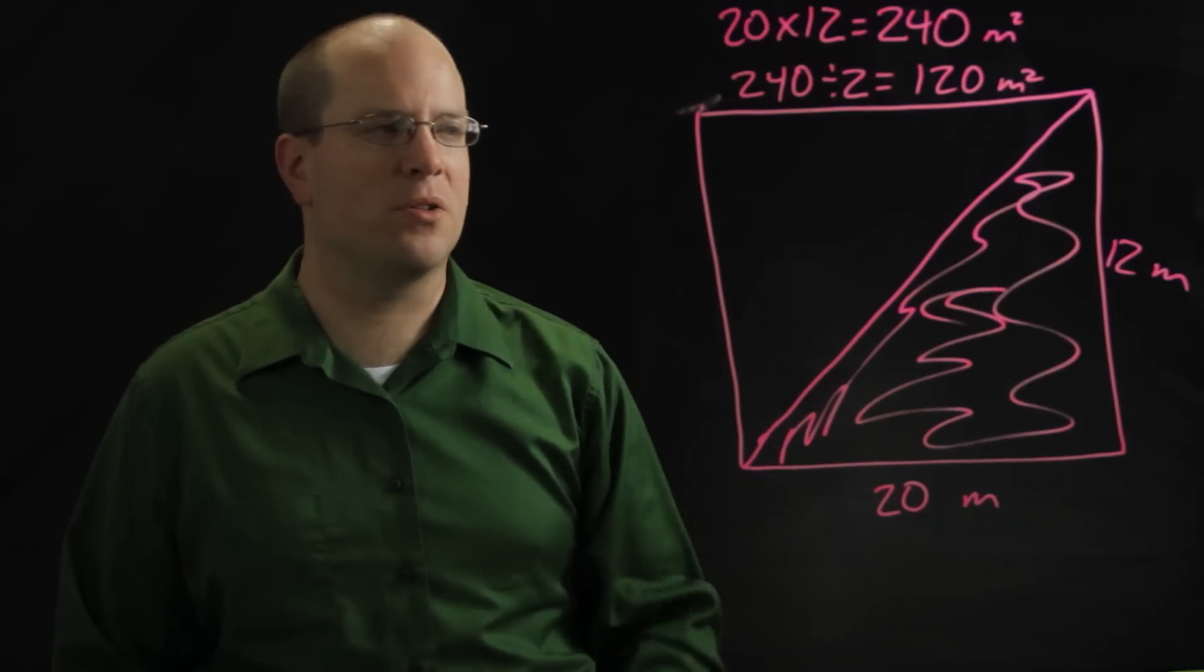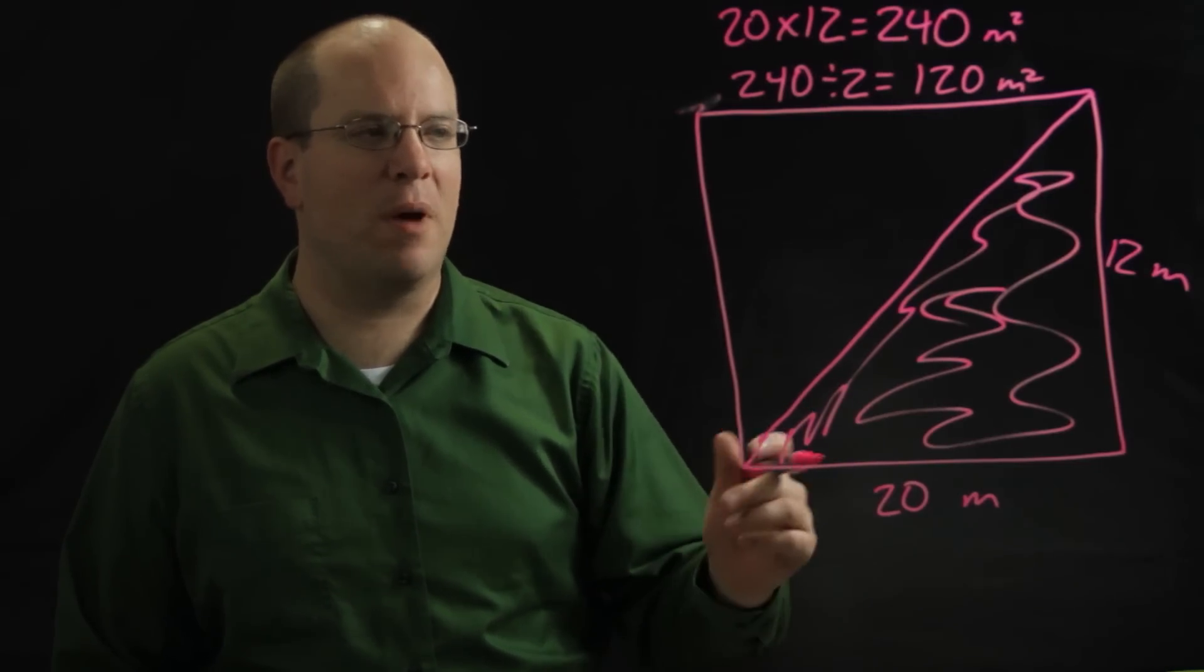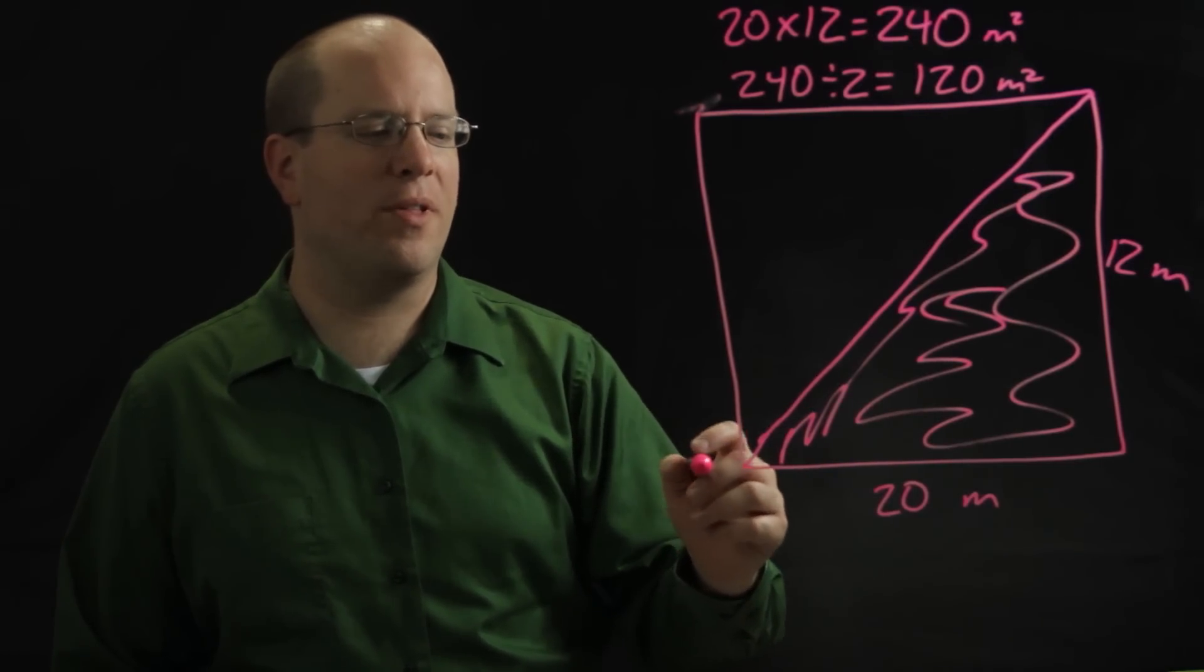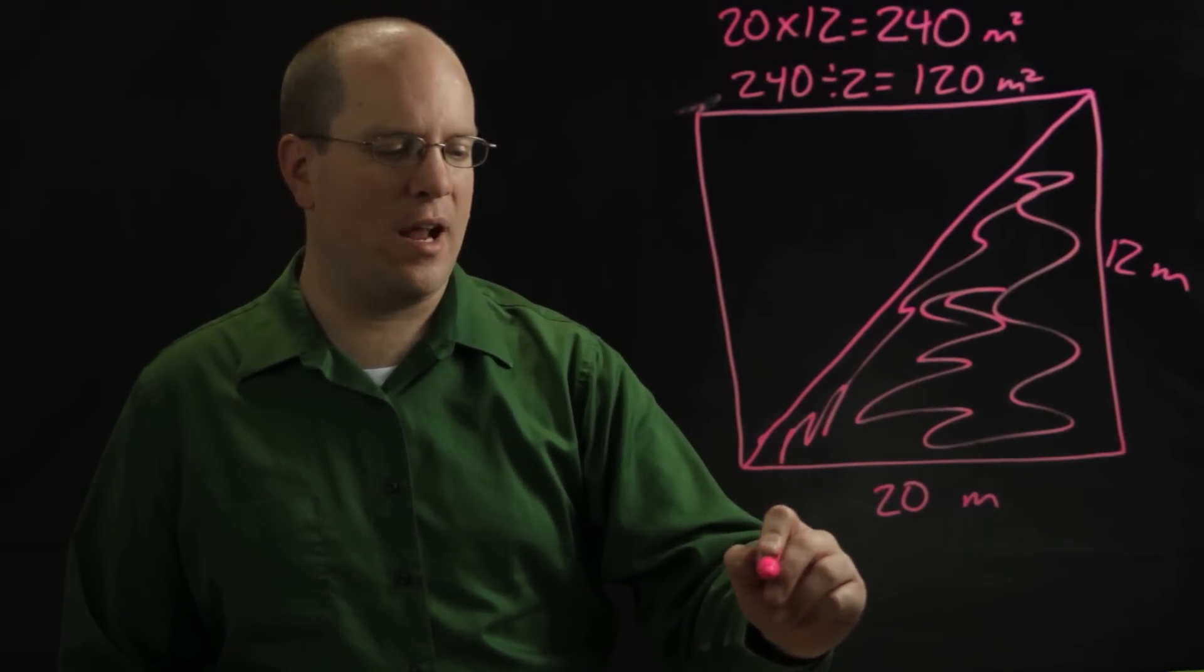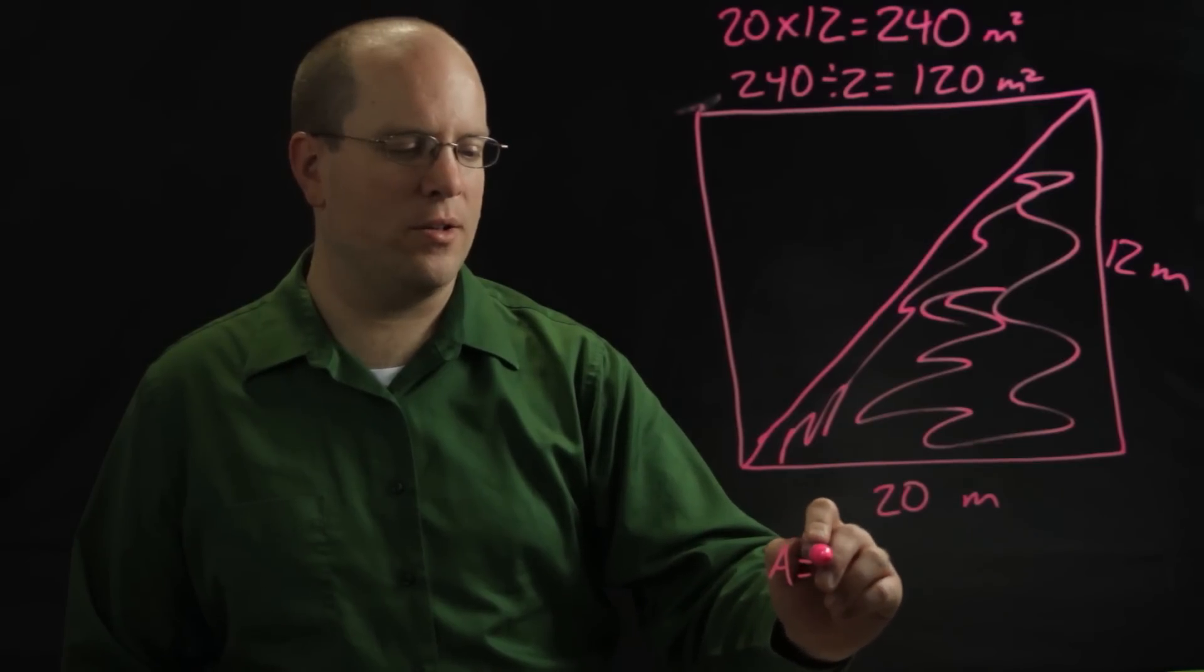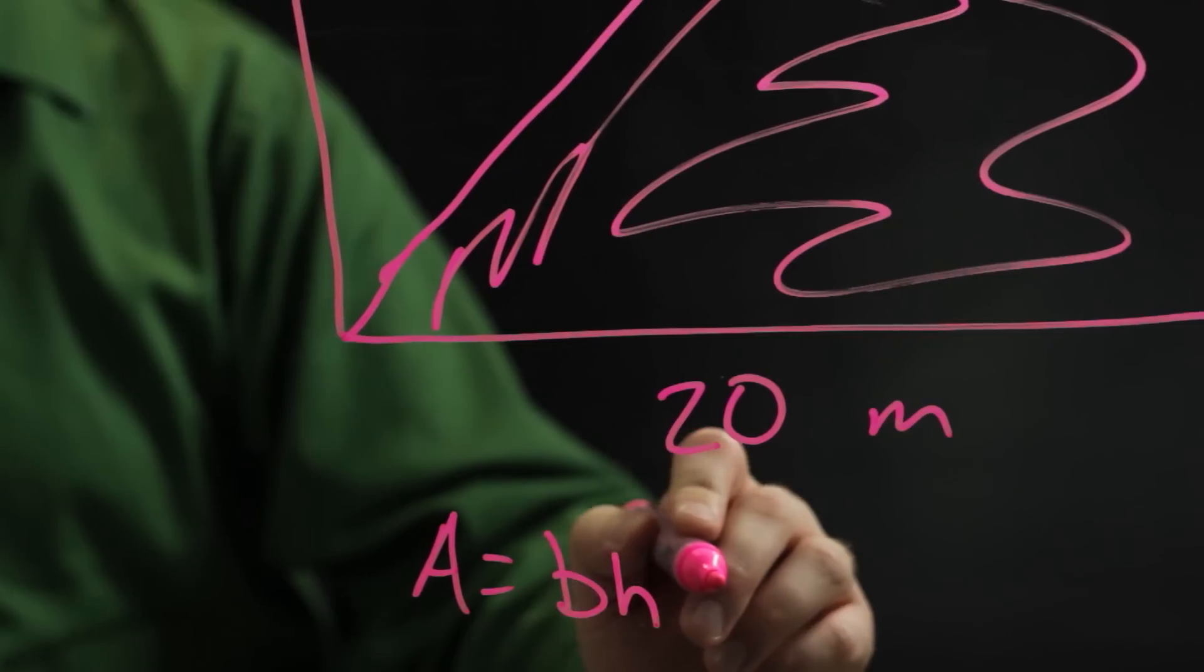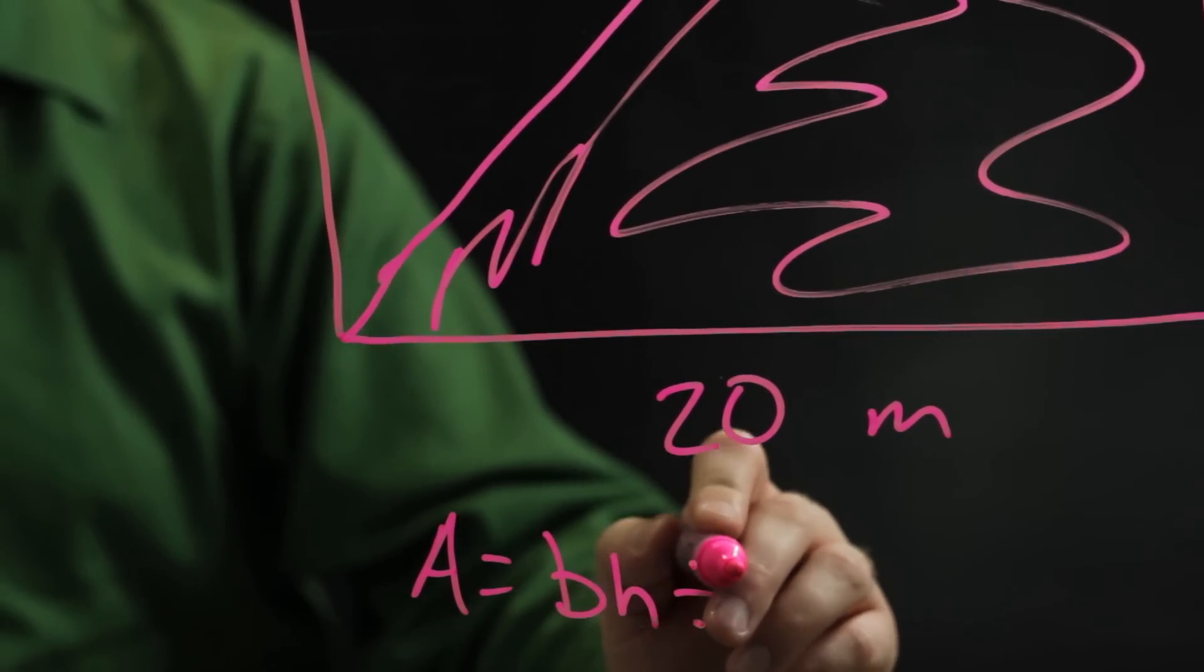They'll come up with all sorts of ways to do this, but by the end of the lesson what you hope that they get is that the area of a triangle is the base times the height divided by 2.